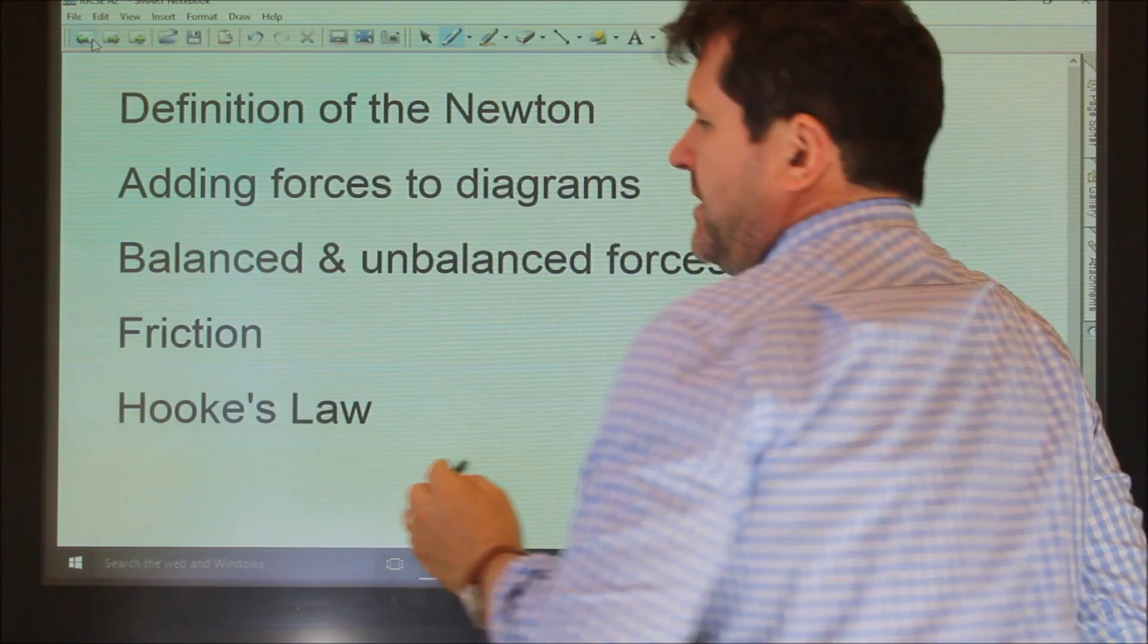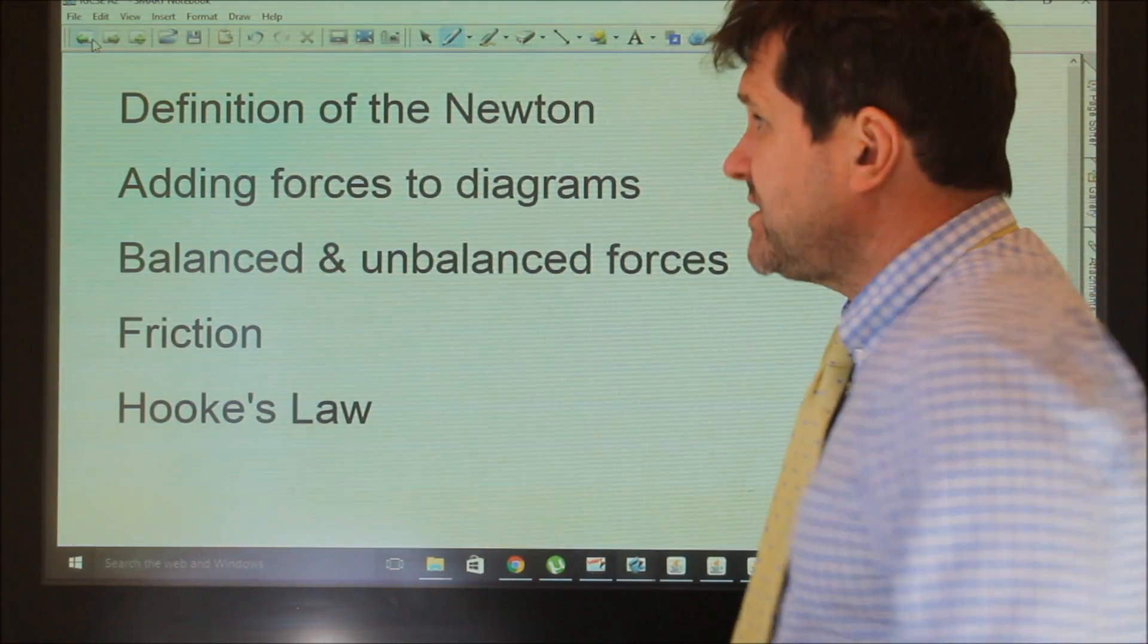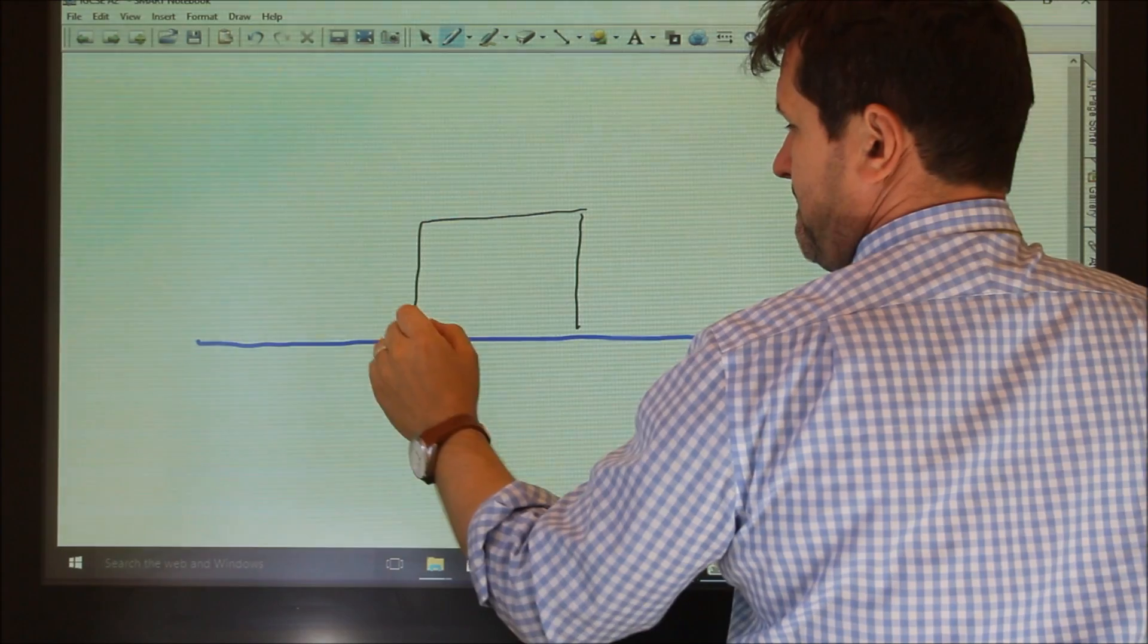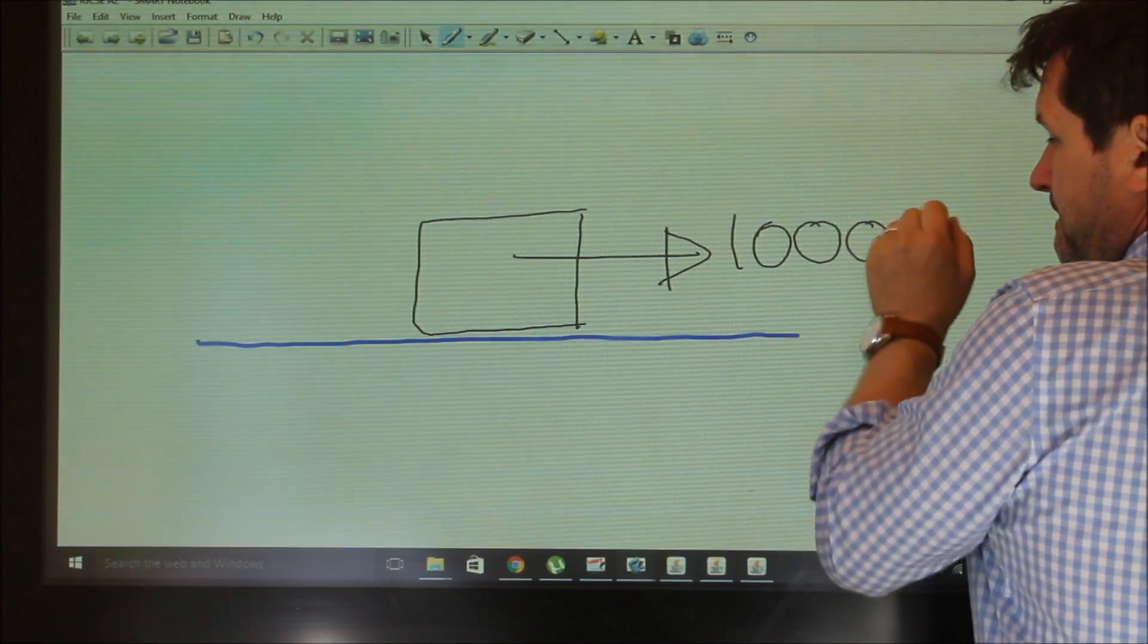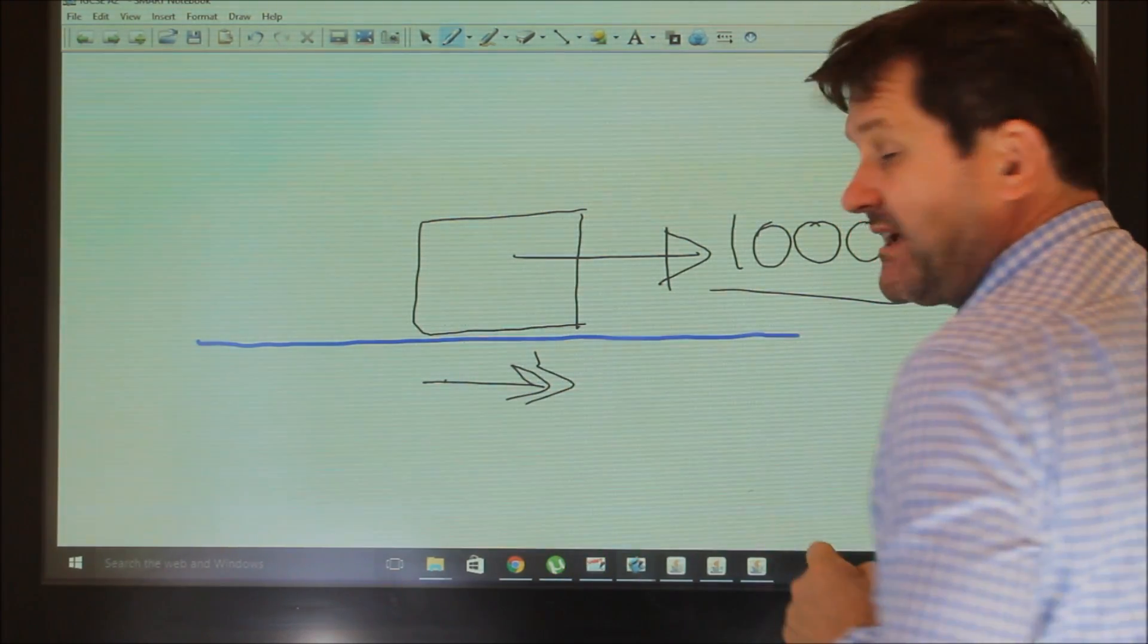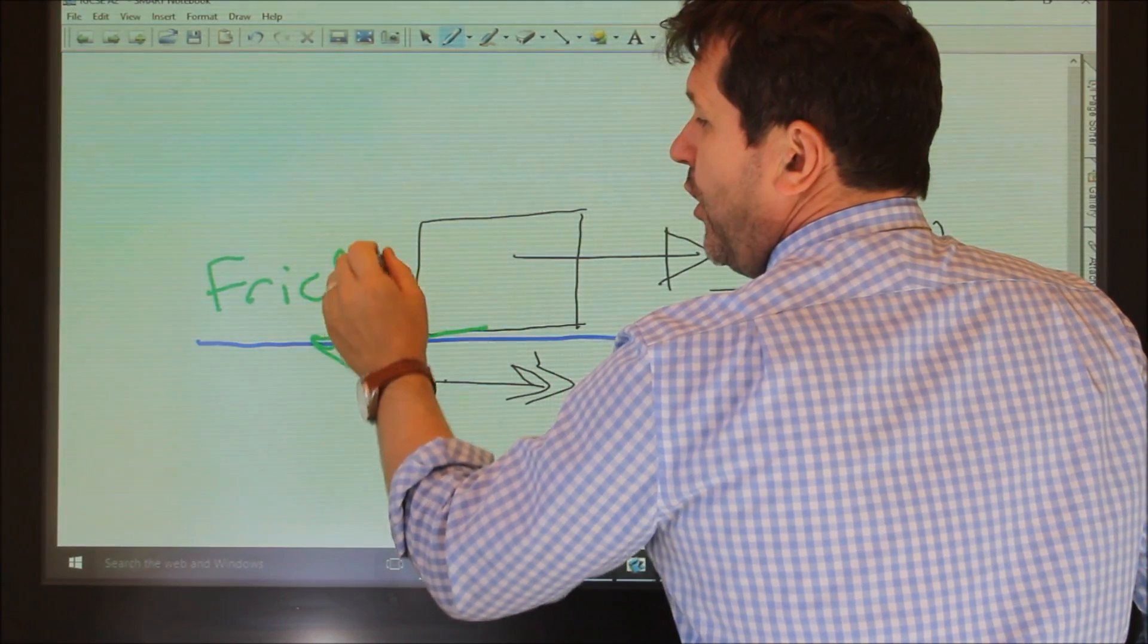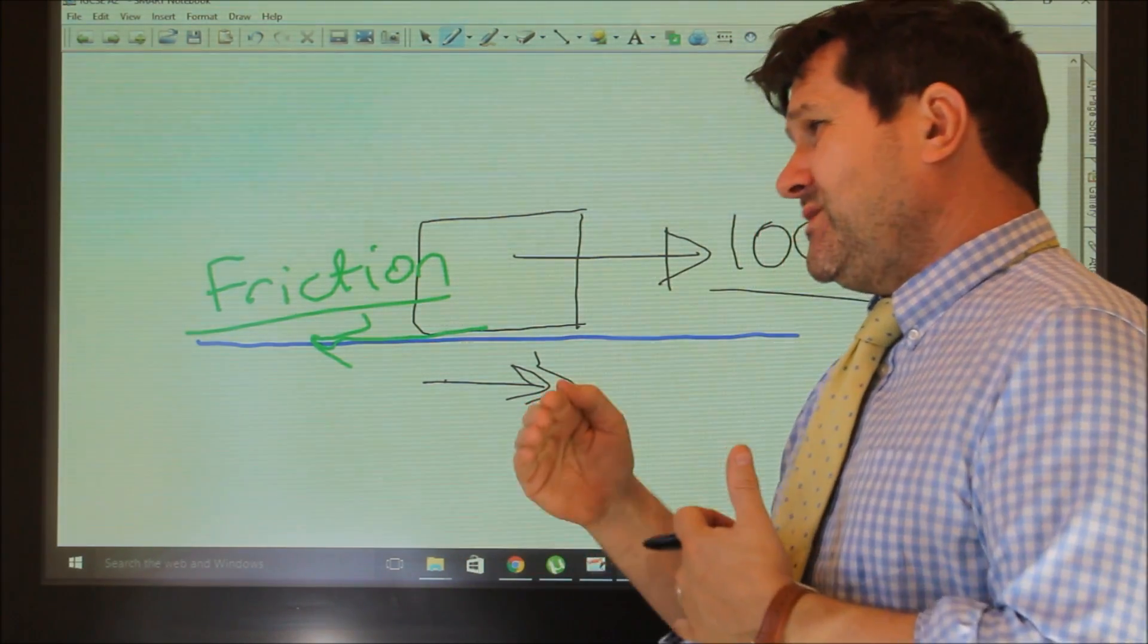So if we just look back, friction always acts in the opposite direction of the motion. So whatever you've got in any situation, if you've got a box, if the box has a force acting on it, and the box begins to move in this direction, so the box is moving in this direction, as soon as it does so, there must be a force acting in the opposite direction, and that would be friction. So friction always acts in the opposite direction of the motion, to oppose the motion.